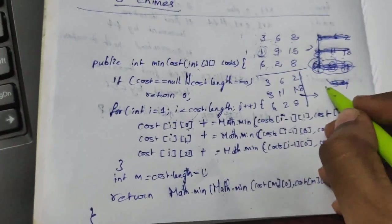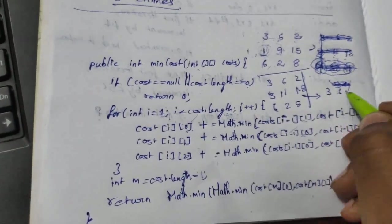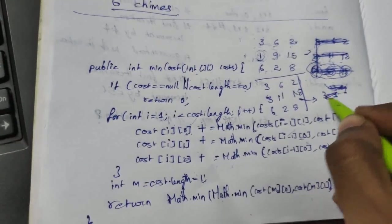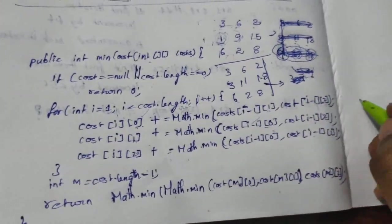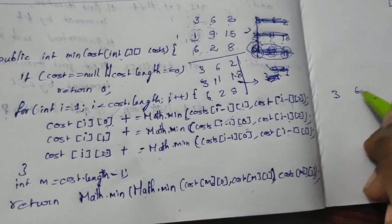Next, since this is the last iteration: 3, 6, 2.